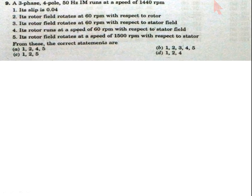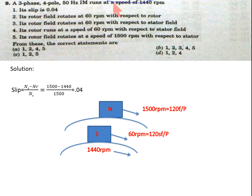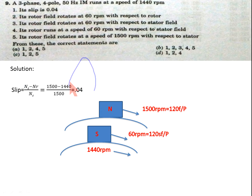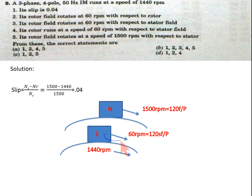Question 9: A 3-phase, 4-pole, 50 Hz induction motor runs at a speed of 1440 rpm. Solution: When a 3-phase 50 Hz supply is given to the stator, the stator field rotates at 1500 rpm, obtained from 120f/p. Substituting Nr and Ns gives slip = 0.04, so statement 1 is correct. For statement 2, the rotor field rotates at 60 rpm with respect to the rotor, since the rotor rotates at 1440 rpm and the rotor field rotates at 60 rpm on top of it. Statement 2 is correct.